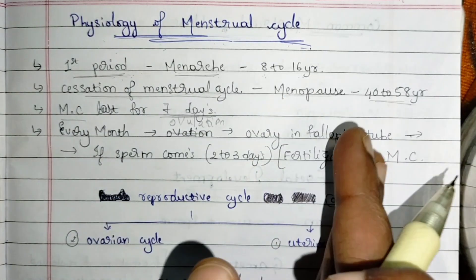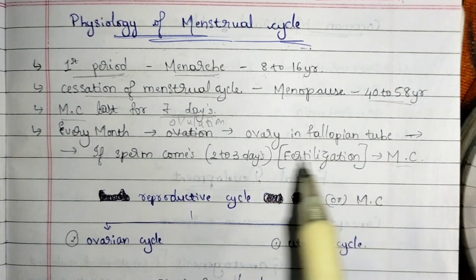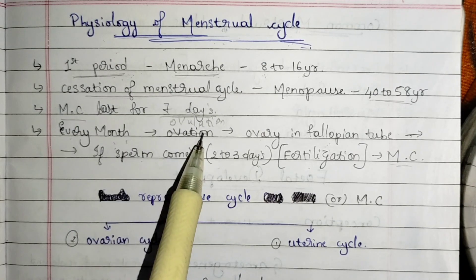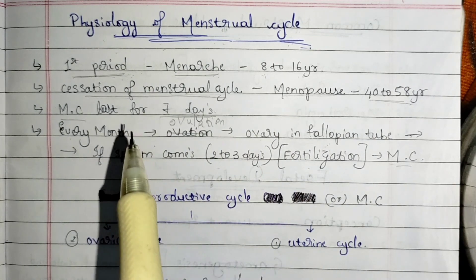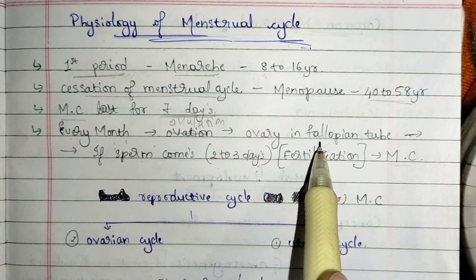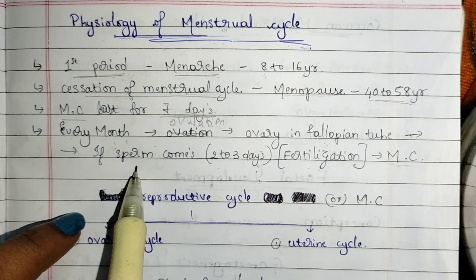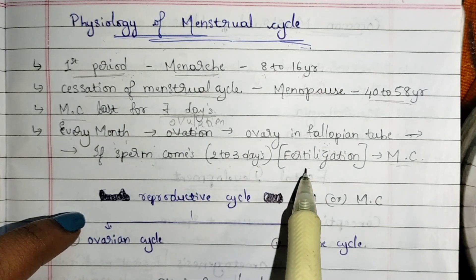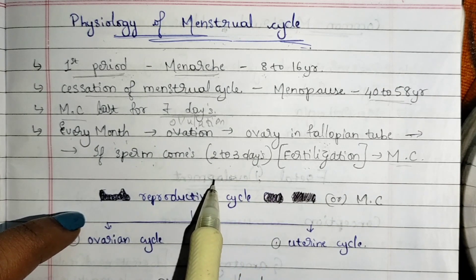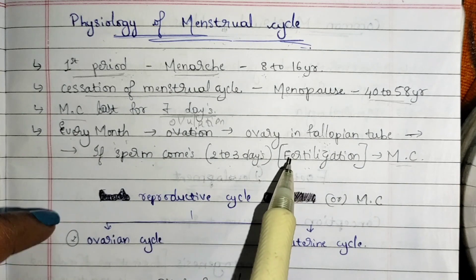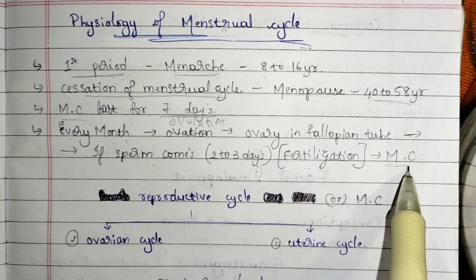If the cycle lasts more than 10 days, you need to visit a doctor. In brief, every month ovulation occurs — the ovary releases an egg. This released egg goes to the fallopian tube and waits there. If sperm comes within 2 to 3 days, fertilization occurs and the woman gets pregnant, with no menstrual cycle for 9 months. If sperm doesn't come, the egg in the fallopian tube dries within 2 weeks and the menstrual cycle occurs.